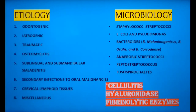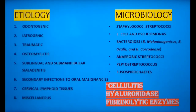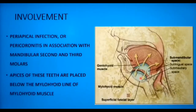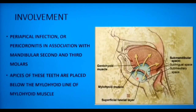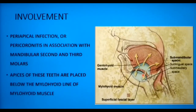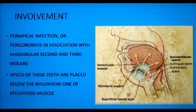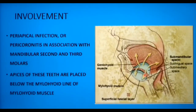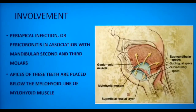Microorganisms isolated from culture specimens include Staphylococci, Streptococci, E. coli, Bacteroides, Anaerobic Streptococci, Peptostreptococcus, and Fusobacteria. Ludwig's angina usually follows a submandibular space infection caused by a periapical infection or pericoronitis around the mandibular 2nd and 3rd molars, whose apices are placed below the mylohyoid line, so infection tends to spread primarily to the submandibular spaces.